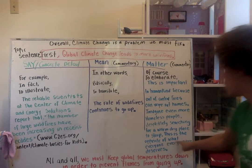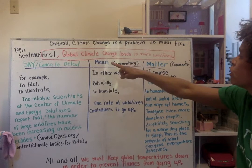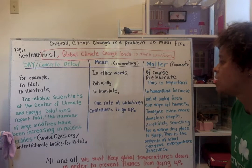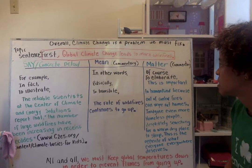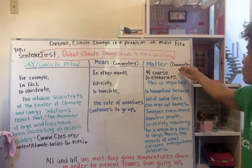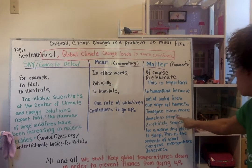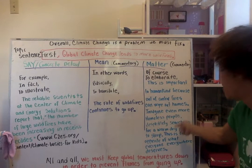I'm going to read the whole thing again. First, global climate change leads to more wildfires. To illustrate, the reliable scientists at the Center of Climate and Energy Solutions report that the number of large wildfires have been increasing in recent decades. Basically, the rate of wildfires continues to go up. Of course, this is important to humankind because out of control wildfires can wipe out homes. Imagine even more homeless people desperately searching for a warm, dry place to sleep. This is the opposite of what everyone, everywhere deserves.